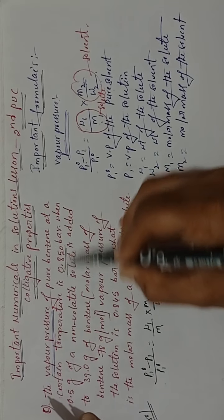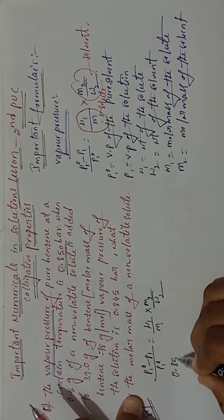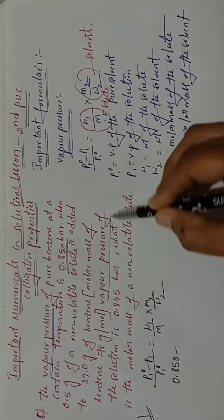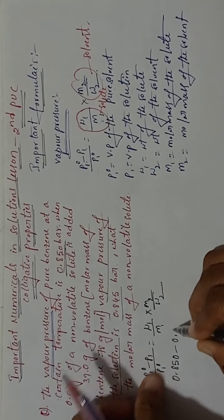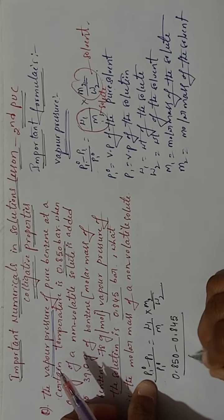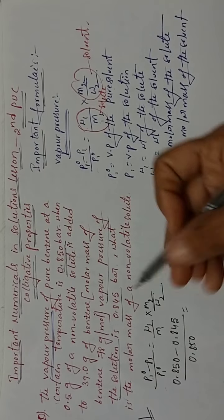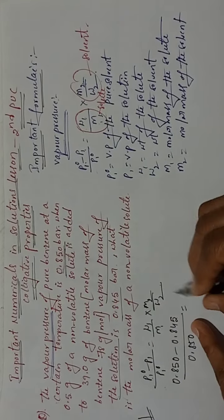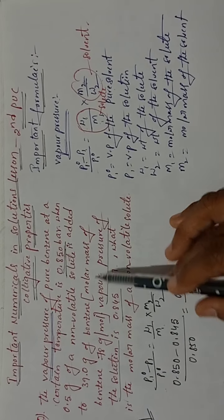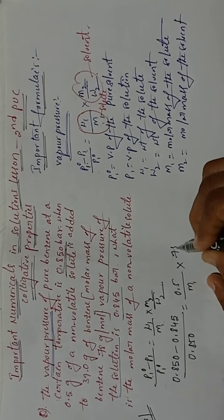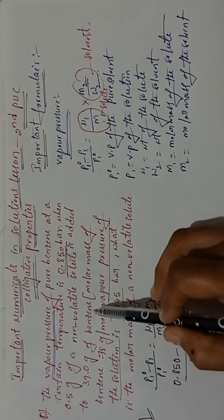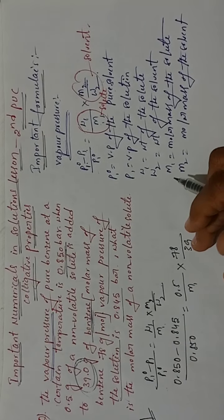Now substitute the values. p1⁰ is the vapor pressure of the pure solvent benzene = 0.850 bar. p1 is the vapor pressure of the solution = 0.845 bar. w1 (weight of solute) = 0.5 grams. m1 is the molar mass of the solute — what we need to find. m2 (molar mass of benzene) = 78, and w2 (weight of benzene) = 39 grams.